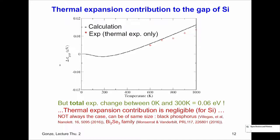It's not always the case that the thermal expansion effect can be neglected. For black phosphorus and bismuth selenide, it can be 40–50% of the temperature-dependent electronic structure change. But this is mostly for soft solids; for typical covalently bonded solids it will generally be negligible.